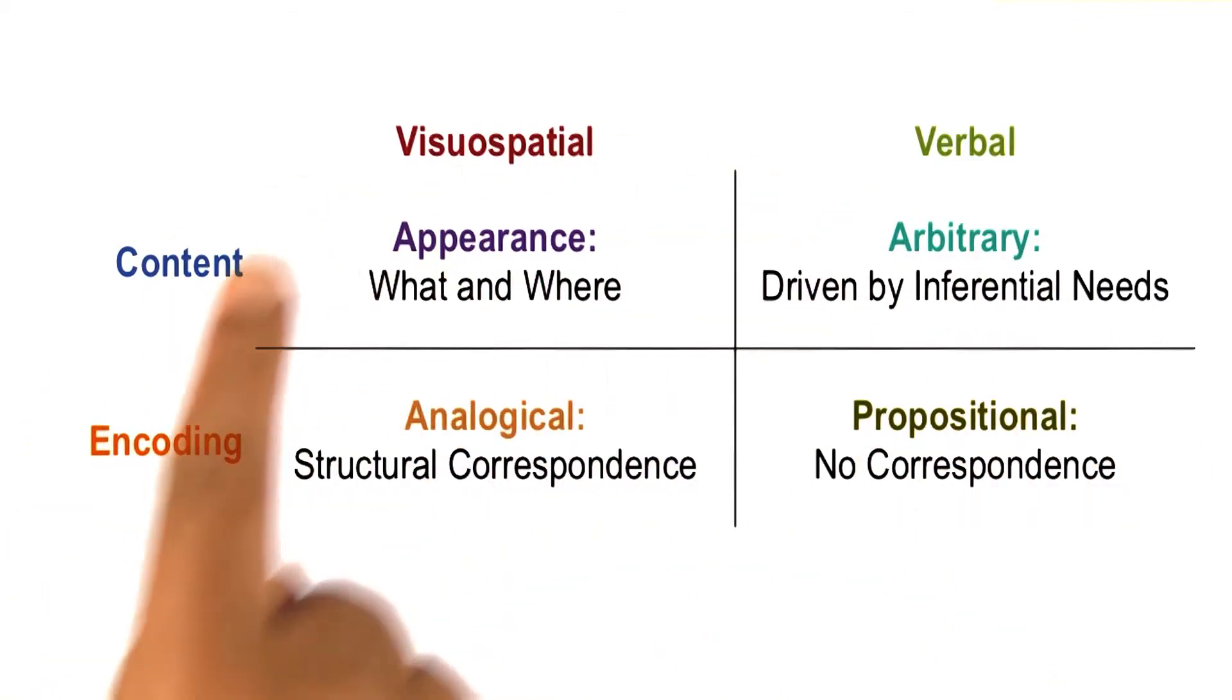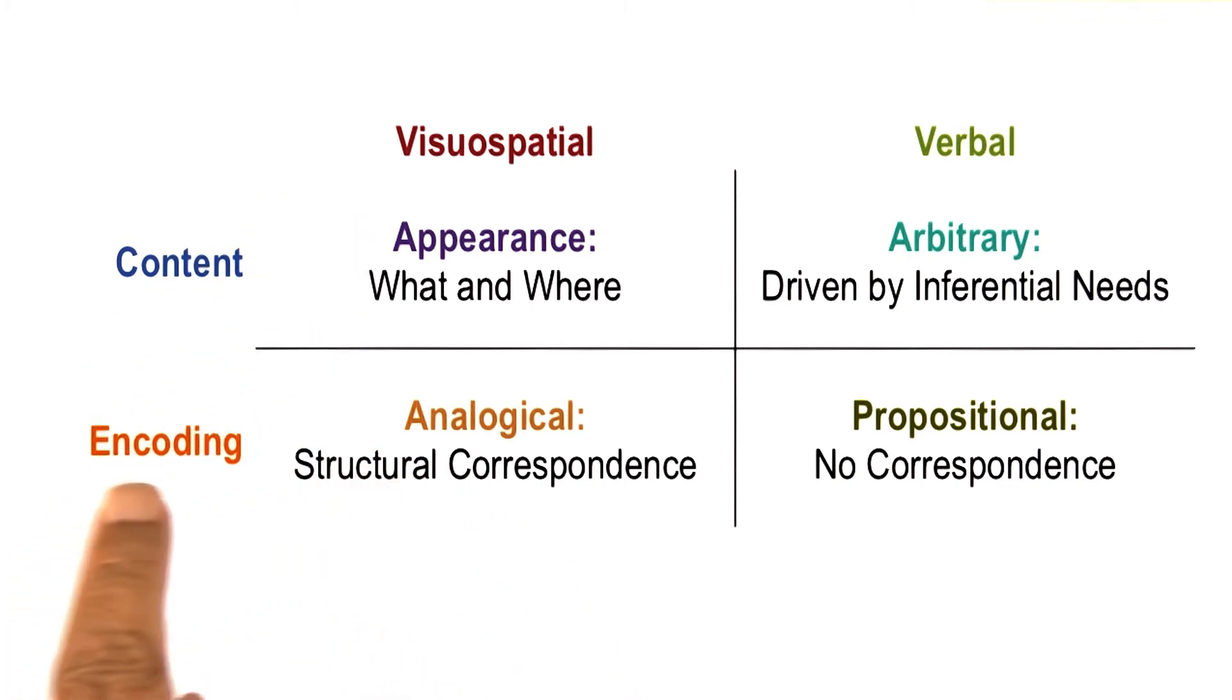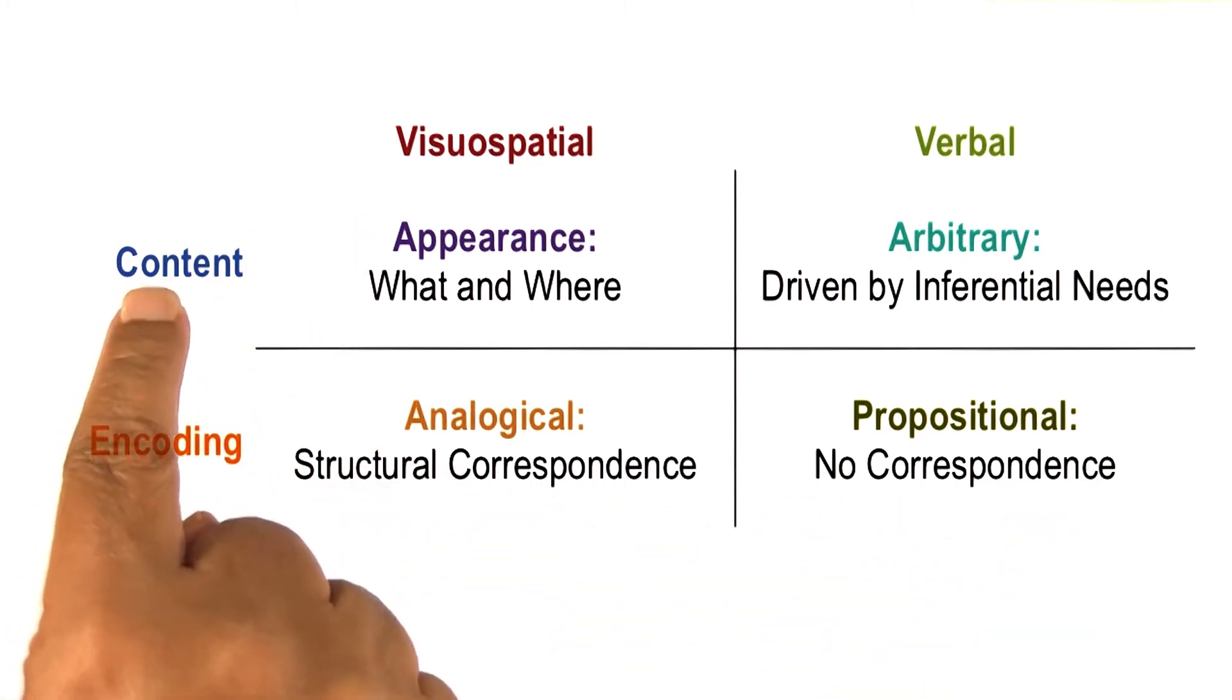This chart summarizes some of the discussion so far. Content deals with the content of knowledge. Encoding deals with the representation of knowledge, content and form.